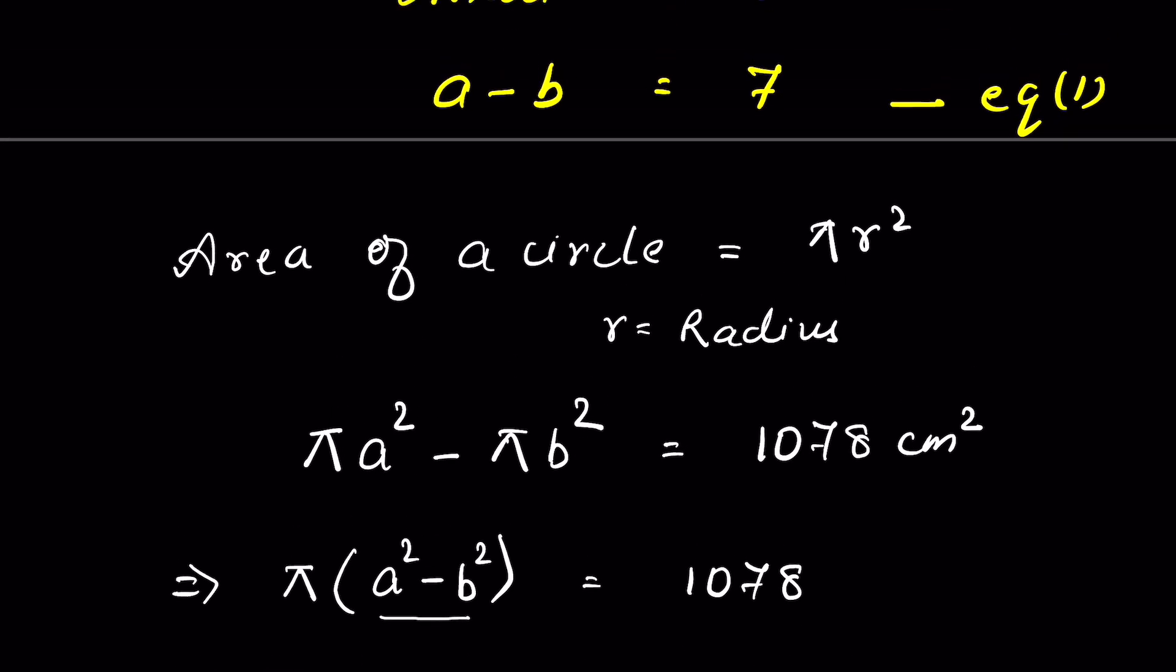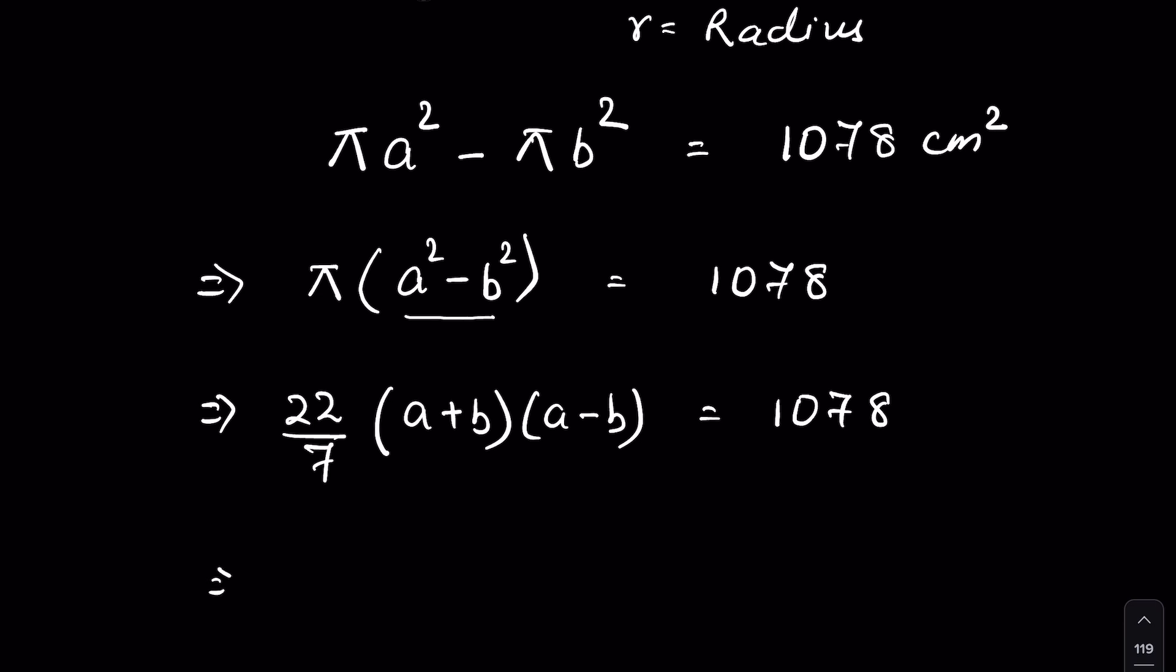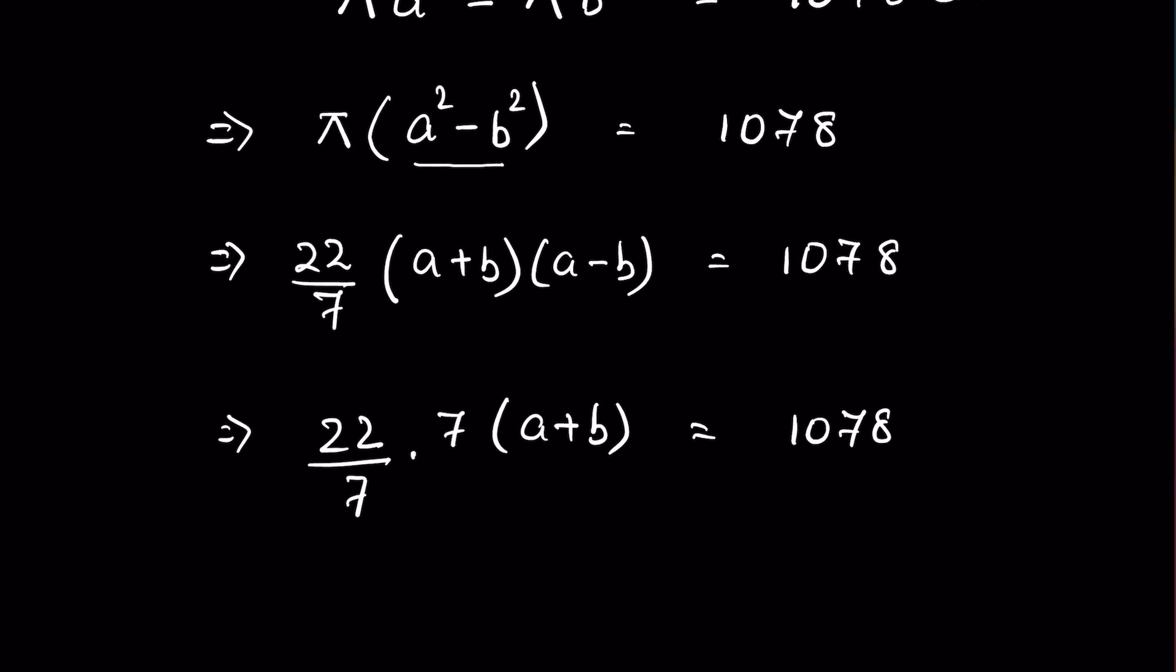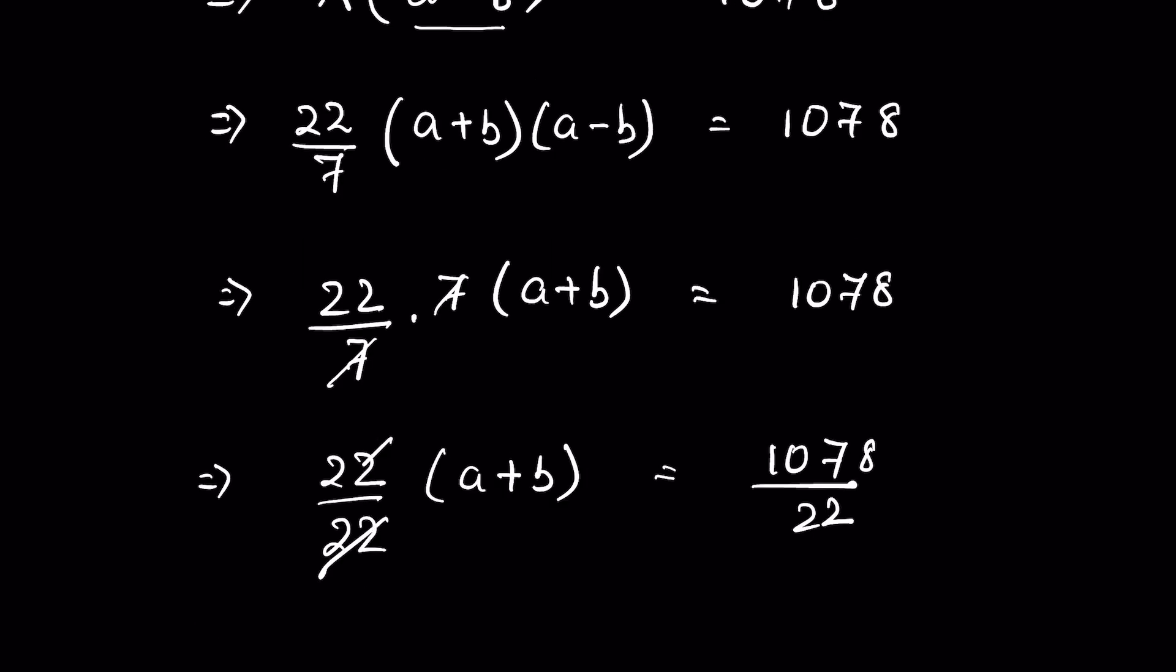From equation 1, a minus b is 7, so 22 upon 7 times 7 then times (a + b) is equal to 1078. We can cancel this 7 and this 7. Divide both sides by 22. This 22 and 22 gets cancelled.